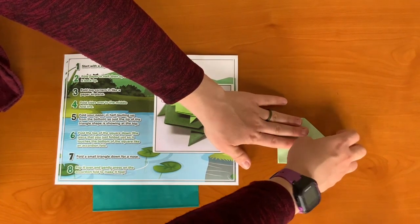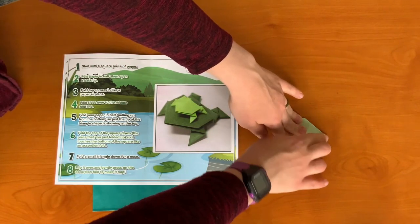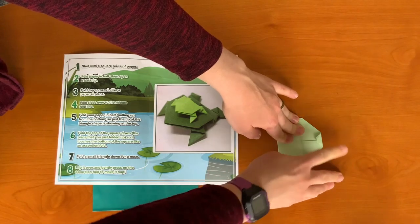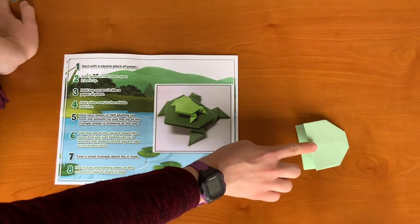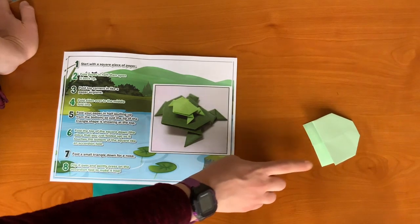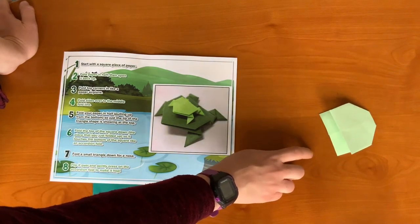Step seven, fold a small triangle down for a nose. And press the accordion down to make it flat.